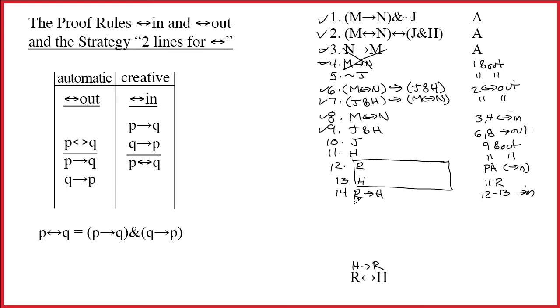So this is going to have another box. Because I know what this proof is going to look like, I've made this box a little larger and left myself more space. You never know that, so that's why we work with an eraser. H at the top, R at the bottom. This is a provisional assumption, as always. And it's for arrow in, because we're trying to prove an arrow.